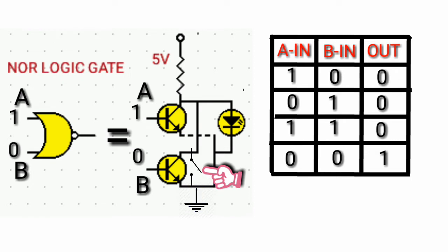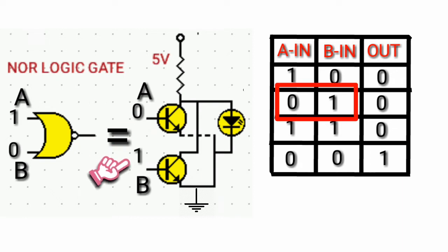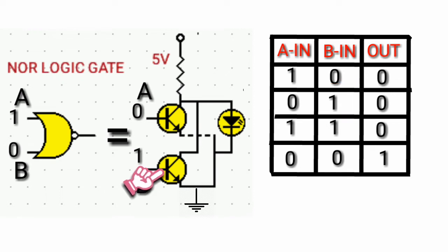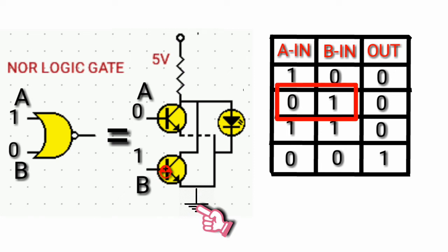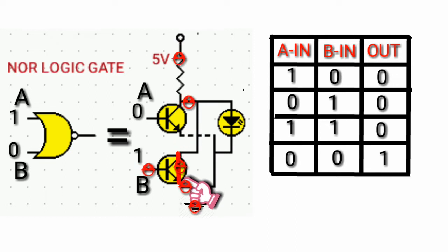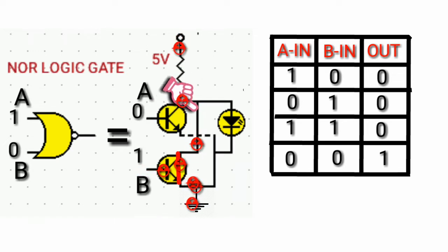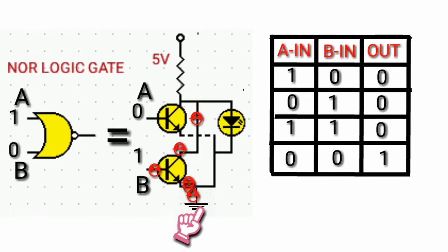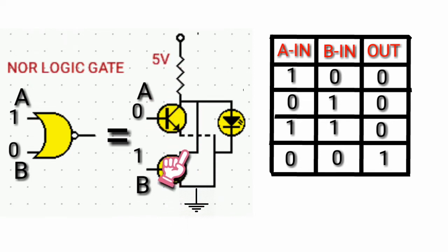Now let's inject input A with logic low and input B with logic high. The second transistor's base current flows through the emitter, and the collector-emitter acts like a closed switch. Therefore, the current from the battery flows through the resistor, enters the collector of the transistor, and goes out from the emitter back to ground. So the current from the battery goes to ground and no current flows through the LED, so the output is logic low. Transistor one, since it has logic low input, is not working.